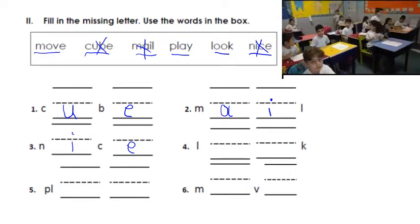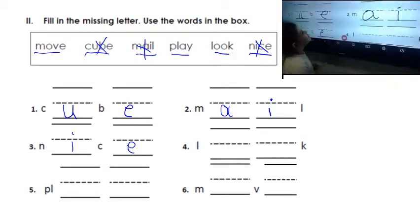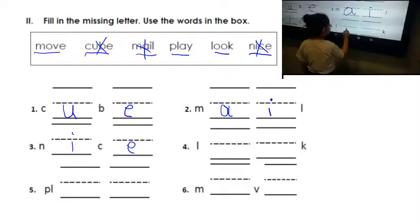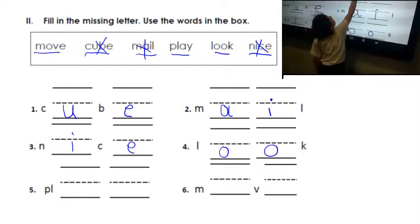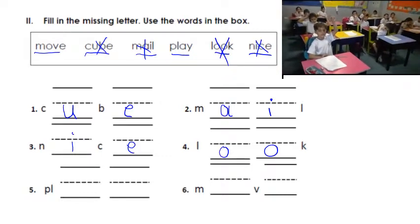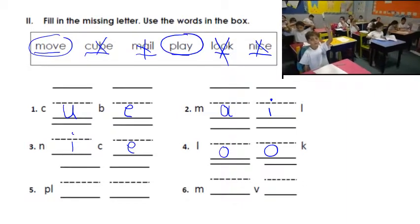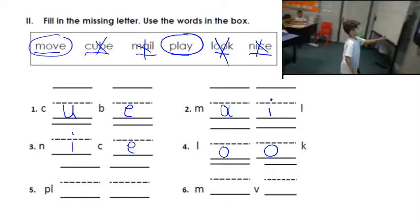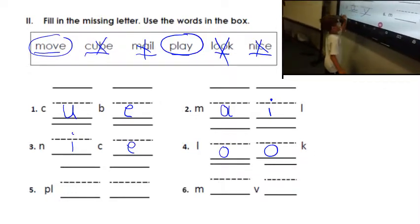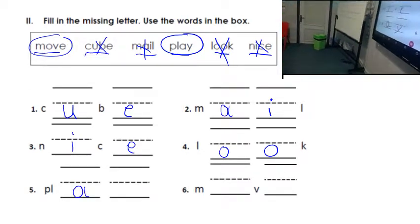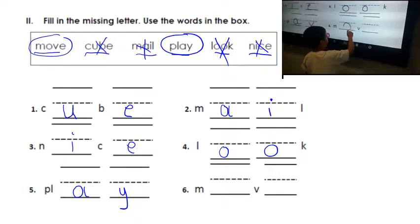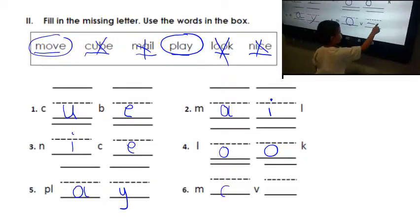Now moving on to fill in the missing letter. We're still in the phonics section. Use the words in the box. We have the words move, cube, male, play, look, and nice. Which one fits in number one? Cube. Thank you. Number two, which word goes in number two? Male, with long A. Number three, which word fits in number three? Nice. Number four, which word? No. Number five, which word goes in number five? Play. Excellent. And number six? Move. Thank you Fadul.